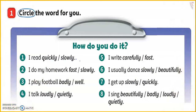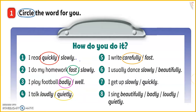In our activity book, page 47, how do you do it? Number one: I read quickly. Two: I do my homework fast. Three: I play football badly. Four: I talk quietly. Five: I write carefully. Six: I usually dance beautifully. Seven: I get up slowly. Eight: I sing loudly.